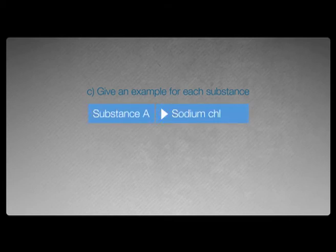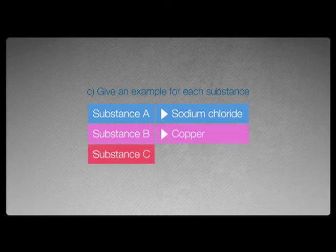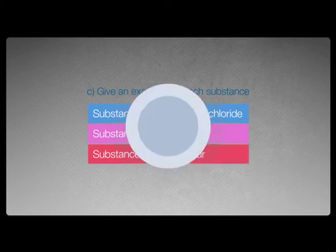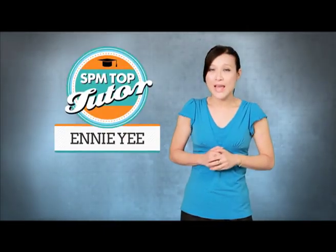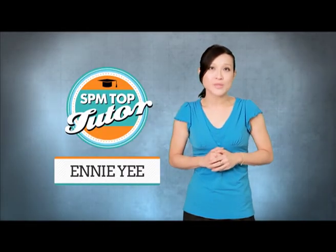Question C: give an example for each substance. An example for substance A can be sodium chloride. An example for substance B can be any metal like copper. An example for C can be any non-metal like sulfur. I hope that gave you a good idea of what to expect in your exams. I'm Annie E — good luck and see you again on SPM Talk Tutor Science.